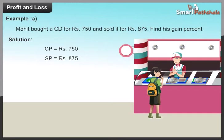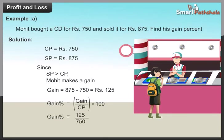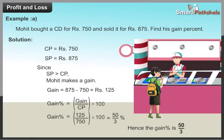SP is equal to Rs. 875. Since SP is greater than CP, Mohit makes a gain. Gain is equal to 875 minus 750, which is equal to Rs. 125. Gain percent is equal to gain divided by CP into 100, which is equal to 125 divided by 750 into 100, equal to 50 divided by 3 percent. Hence, the gain percent is 50 divided by 3.